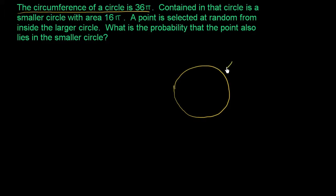And the circumference, we have to be careful here. Circumference is 36 pi. Then they tell us that contained in that circle is a smaller circle with area 16 pi. So inside the bigger circle, we have a smaller circle that has an area of 16 pi.